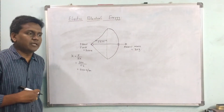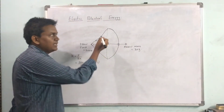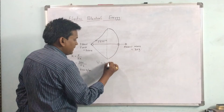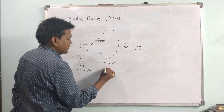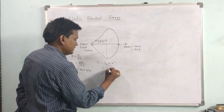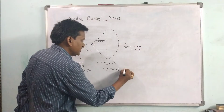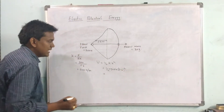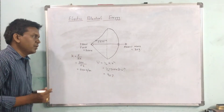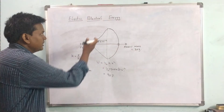Now if you find the potential energy stored in this bow, that is U equal to half k x square. So half times 500 times 0.6 squared. After all cancellations we get 90 joules. So 90 joules of potential energy is stored in the bow when the archer draws some force on the string.